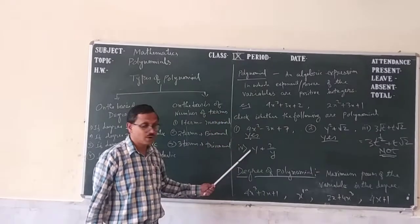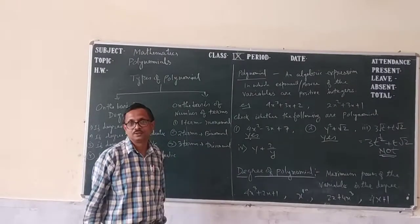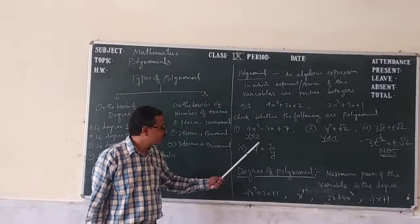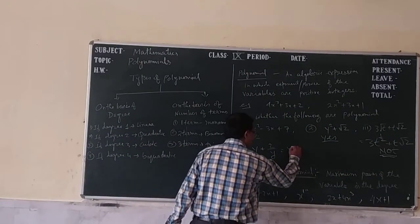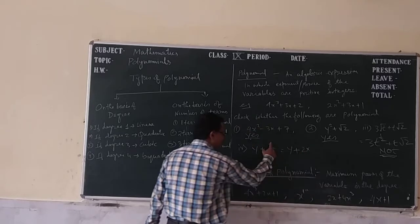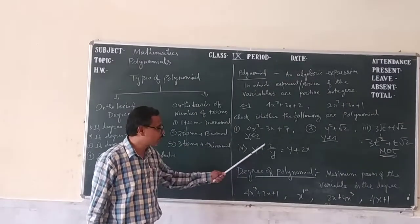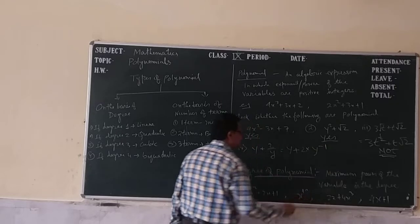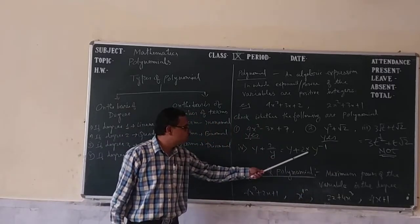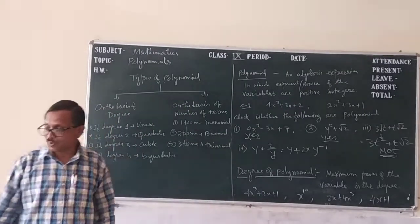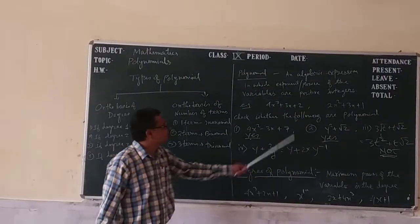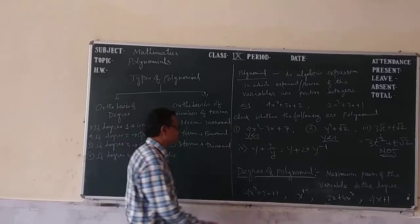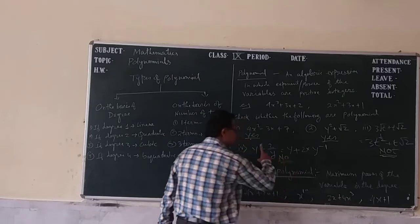Here the expression is Y plus 2 upon Y. Y is the variable. Here power of Y is 1, but 2 upon Y means 2 into 1 upon Y. In earlier classes we discussed that 1 upon Y means Y to the power minus 1. So Y to the power minus 1 means it is not a positive integer — it is a negative integer. So it is also not a polynomial.